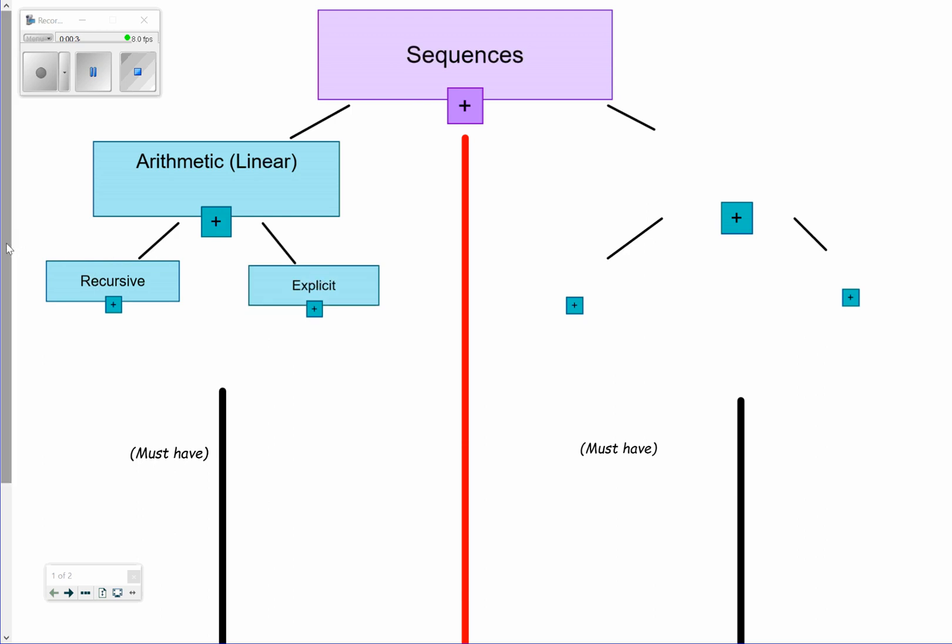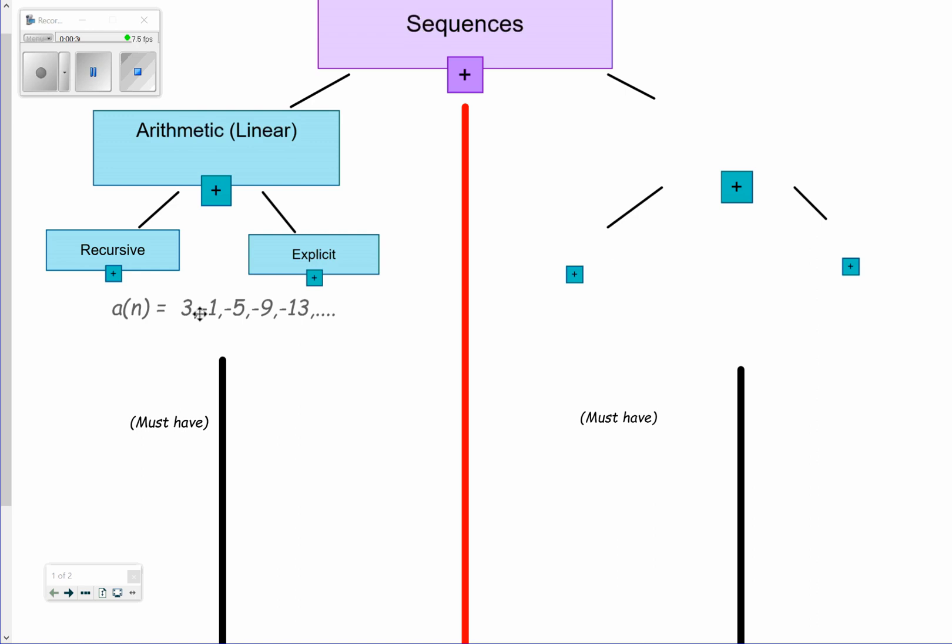Suppose we had a linear sequence, something like this: a sub n equals 3, negative 1, negative 5, etc. After investigating that a little bit, you should notice that it is decreasing at a constant rate. It has what's known as a common difference. In this case, from term to term, it's decreasing by 4.